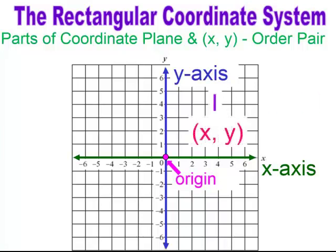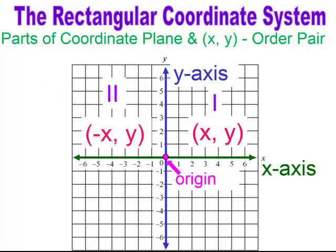Our first quadrant is known as where the X-value and Y-value are both positive. If you notice the X-axis, the values are positive. On the Y-axis, when you go up, the values are positive. So in the first quadrant, my X's and Y's are positive values.